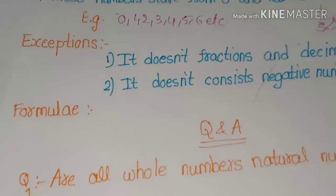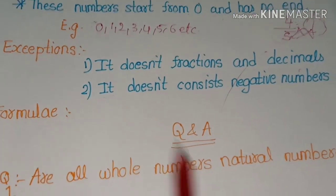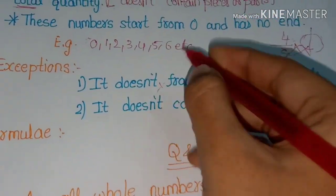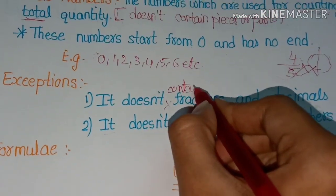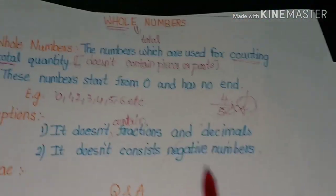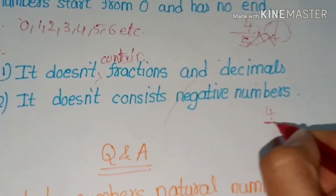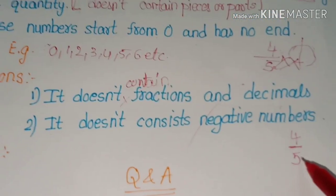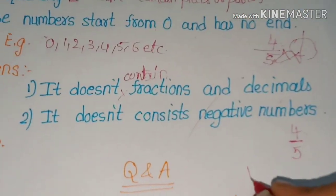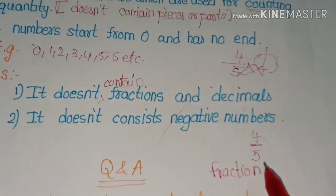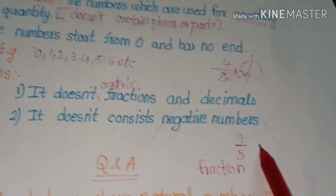Now let's look at the exceptions. The first exception is that whole numbers don't contain fractions and decimals. Taking our earlier example of 4/5 — there are 5 total parts and 4 remaining parts. This is called a fraction because it is representing parts, not total quantities. So fractions are not whole numbers.